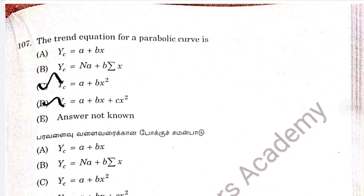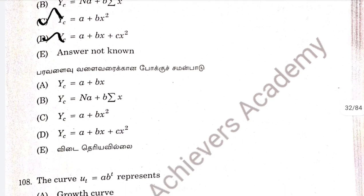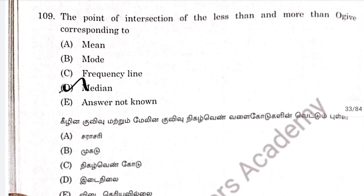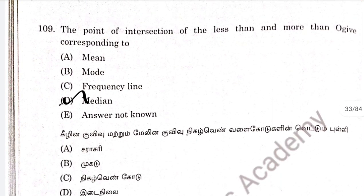Question 107, the trend equation. Option A, option B. The point of intersection of the less than and more than ogives gives the median. Option D.